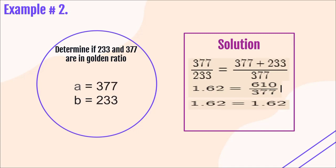So, are our given numbers in Golden Ratio or not? Yes, it is a Golden Ratio. 377 and 233 are in Golden Ratio because they are equal to each other. That concludes our report. I hope you learned something from what we discussed. Thank you very much!